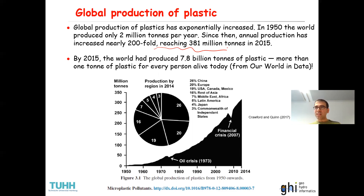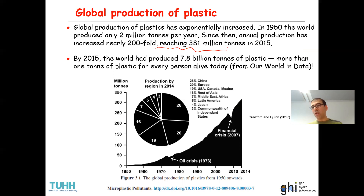In other words, in about 65 years the global production of plastic has increased nearly 200 times, which is a concerning problem. By 2015, the world had produced 7.8 billion tons of plastic — more than one ton of plastic for every person alive today.